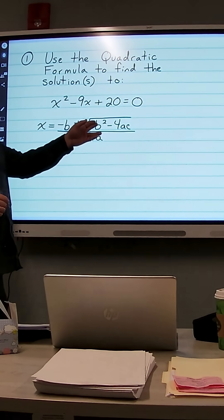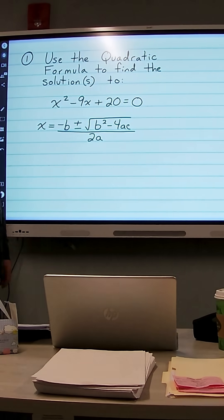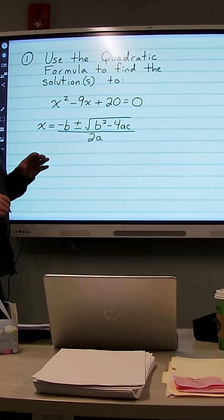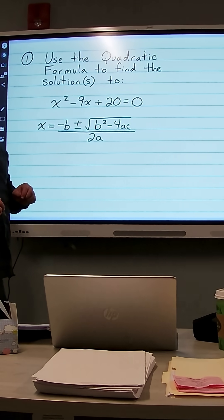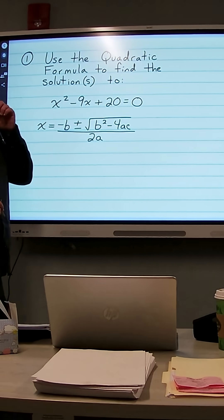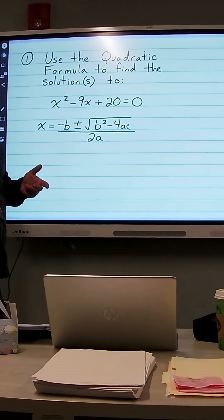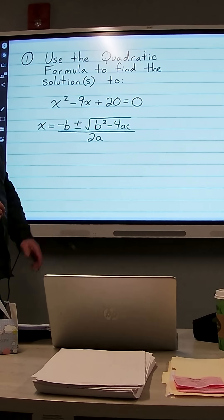Now the part under the square root sign is called the discriminant. If that's greater than 0, you have two real solutions. If that's equal to 0, you have one distinct real solution. And if it's less than 0, you have no real solutions. You have two complex solutions.